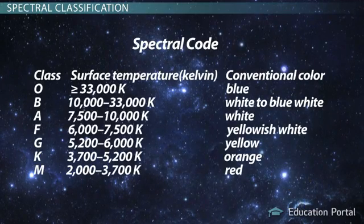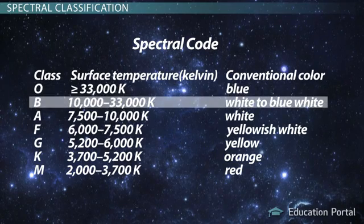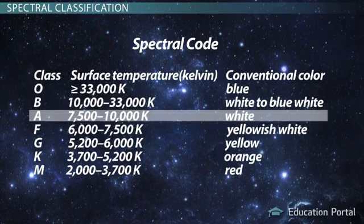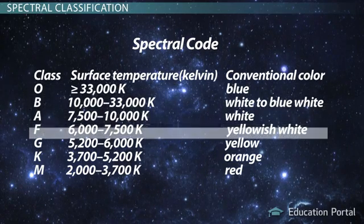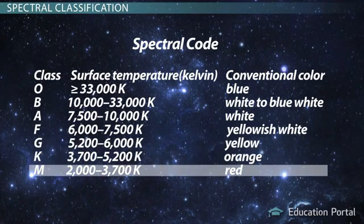According to the modern Spectral Classification System, O stars are blue, B stars are blue-white, A stars are white, F stars are yellow-white, G stars are yellow, K stars are orange, M stars are red.